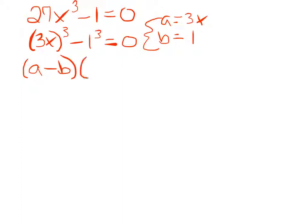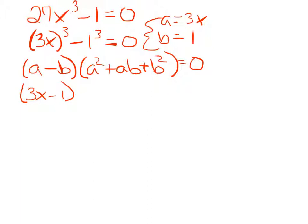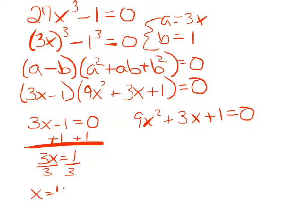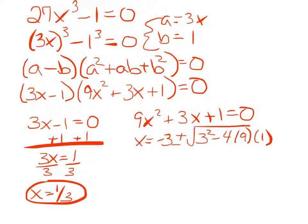Plugging 3x in for a and 1 in for b gives me 3x minus 1, then squaring both the 3 and the x for the second factor. a times b is 3x, and b squared is still just 1. I have two terms multiplying to be 0, so either the first one or the second one has to be 0 from the zero product property. From here, I add 1 and divide by 3 to get x by itself — it's just a linear equation. Love linear equations — super quick. There's my first x value. I notice that my second equation is quadratic, and I'm going to have to use the quadratic formula again.